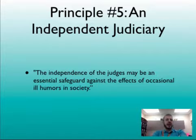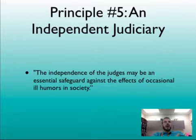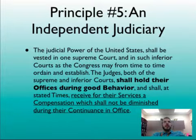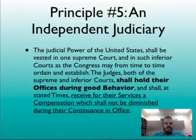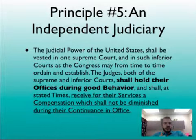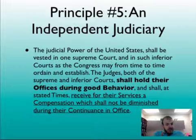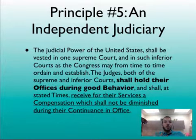Principle number five is an independent judiciary. Hamilton laid it out in Federalist No. 78 — the idea that you need a judicial branch removed from the whims of the public and current political topics. This is why judges hold their office during good behavior, meaning for life. Judges also receive compensation that shall not be diminished during their continuance in office, meaning Congress can't change a judge's salary after they're appointed. Congress can't punish a judge for decisions it disagrees with, and Congress can't fire a judge. A judge can step down or be impeached, but otherwise serves for life. The judiciary is independent of the normal whims of politics.